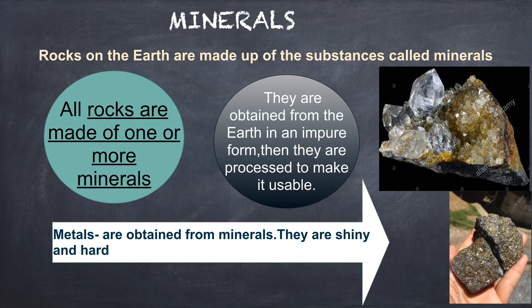Rocks on the earth are made up of substances called minerals. Minerals are another important natural resource. Holes that are dug into the earth are called mines and the things taken out of them are called minerals. The minerals obtained from the earth are in an impure form; they are purified and used to make a number of things. We get metals such as iron, copper, aluminium, gold and silver from minerals. These are shiny and hard. We also get other substances like diamond and limestone from minerals.